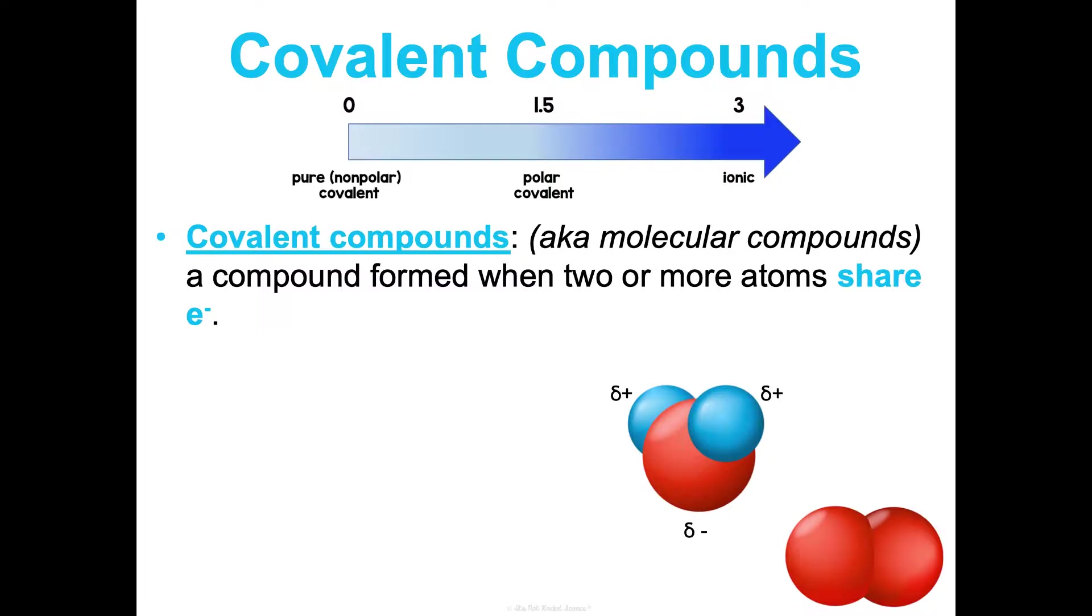Covalent compounds, also referred to as molecular compounds, are compounds formed when two or more atoms are sharing electrons. They form between non-metallic elements.